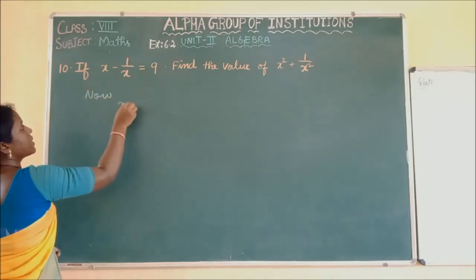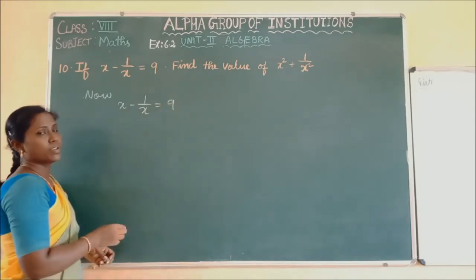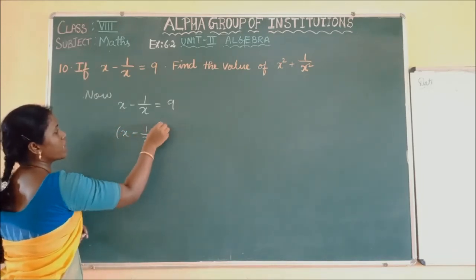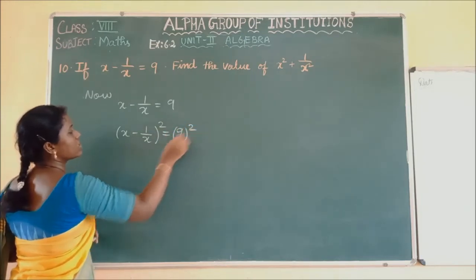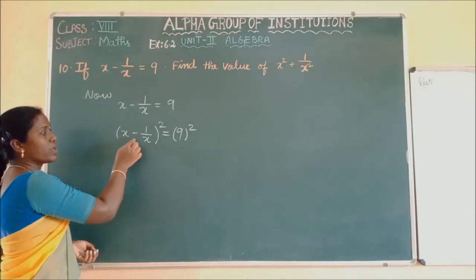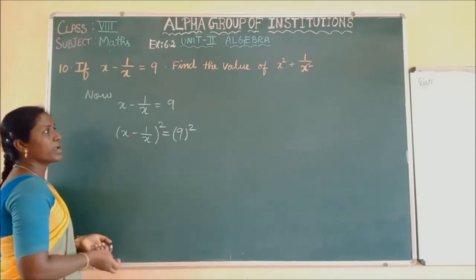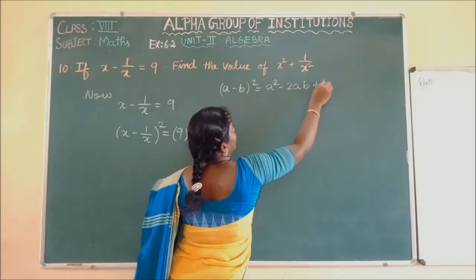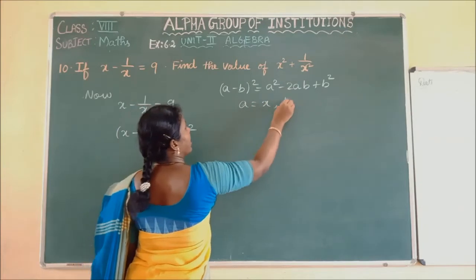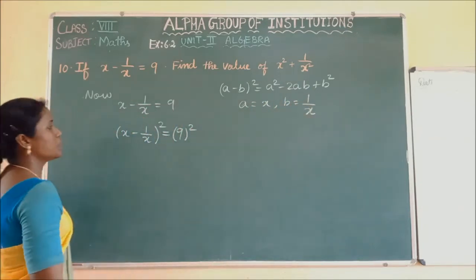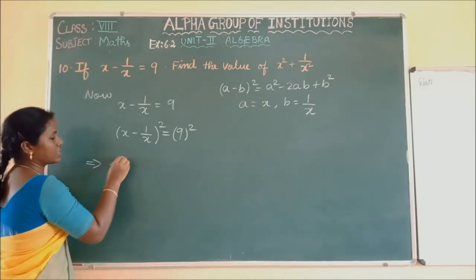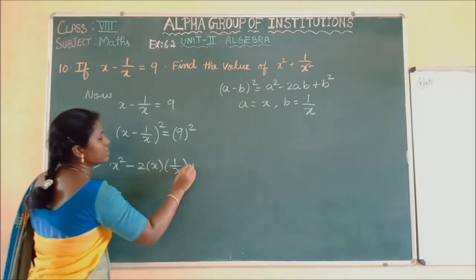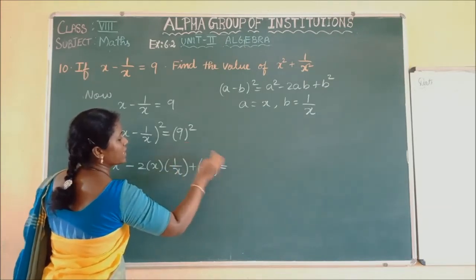Consider X minus 1 by X. Since we need square values, I am taking the square on both sides: X minus 1 by X whole square equals 9 square. This is in the form of A minus B whole square. Expanding using the identity A minus B whole square equals A square minus 2AB plus B square, where A is X and B is 1 by X.